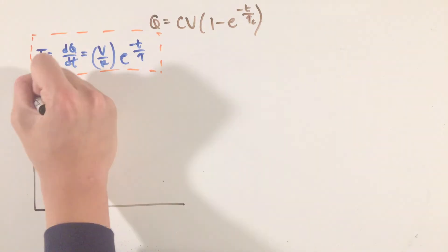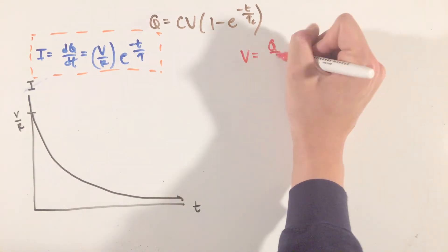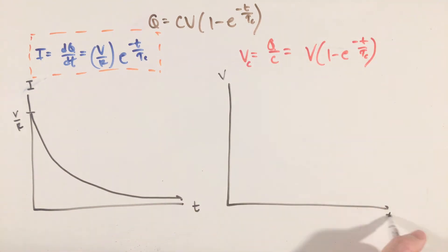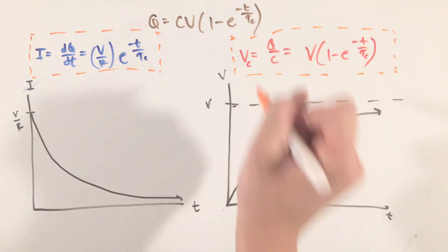In addition, we can use this charge equation to find other quantities as well. For example, taking the derivative of this charge with respect to time, we can find the current equation for this RC circuit. Or, using the relationship Q equals CV for capacitor, we can find an equation for the voltage across the capacitor as a function of time as well.